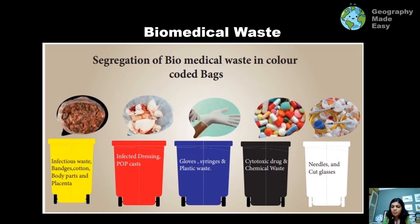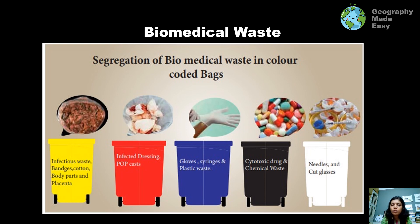Next we have biomedical waste. Different colors segregate different kinds of waste: yellow is for infectious waste like bandages and cotton; red is for infected dressings and POP casts; blue is for PPE kits, gloves, syringes, and plastic waste; black is for drugs and chemical waste; and white is for needles and cut glass. By segregating waste accordingly, we can take action on how to dispose of these different types of waste material.